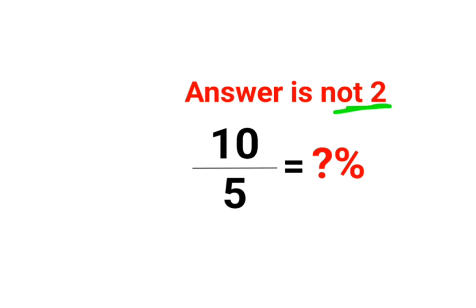Now, why is it like that? See, 10 upon 5. This can be written as what? 5 multiplied by 2 upon 5. So this gets cancelled. So you're left with 2. The answer is supposed to be 2.